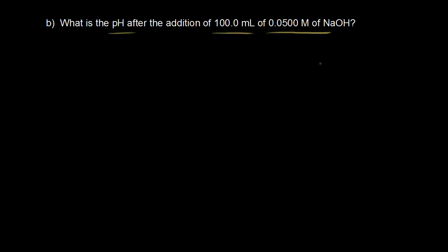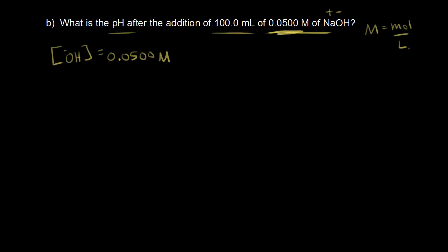Let's find how many moles of base we're adding. The concentration of sodium hydroxide is 0.0500 molar, which equals the concentration of hydroxide ions. Using molarity = moles/liters, and 100 mLs = 0.1 liters: 0.0500 × 0.1 = 0.00500 moles of hydroxide ions.